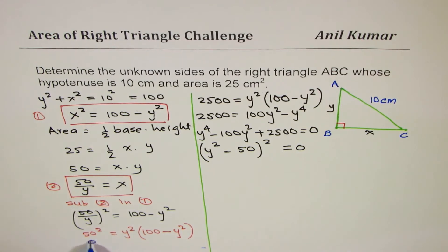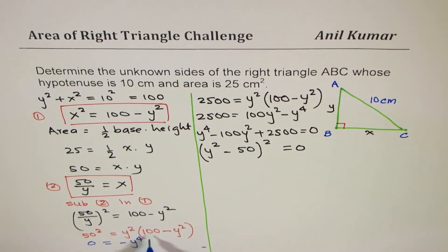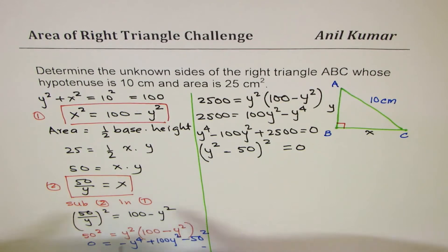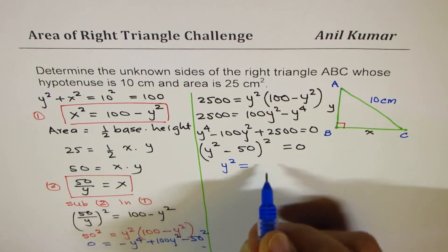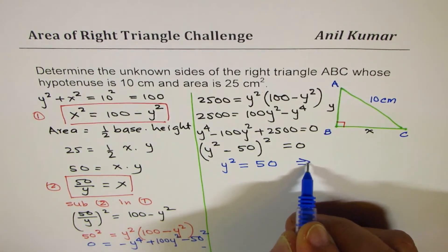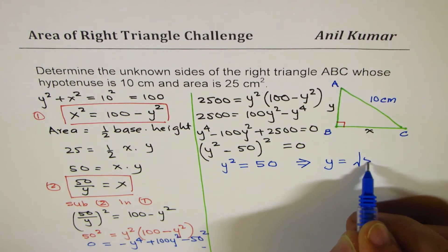So basically we could have written this as 0 equals to Y to the power of, let it be minus, it doesn't matter. And then we have a term which is plus 100 Y square and minus 50 square. The center term is twice AB. Do you see that? And so it is a perfect square. So that becomes your equation.